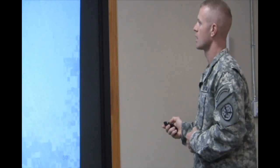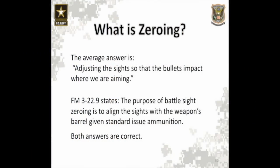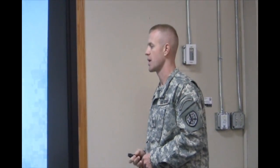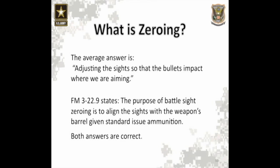So what is zeroing? The basic answer is nothing more than adjusting the sights so the bullet's impact is where you're aiming. FM 3-22.9 states the purpose of a battle sight zero is to align the sights with the weapon's barrel given standard issue ammunition. Both answers are correct.